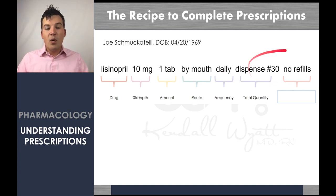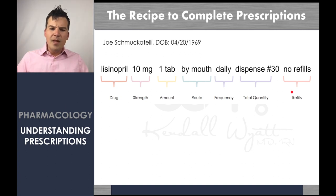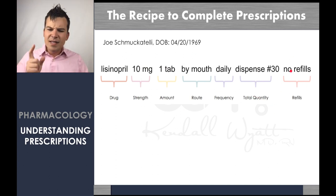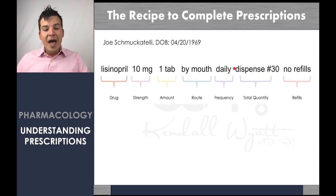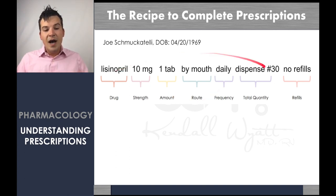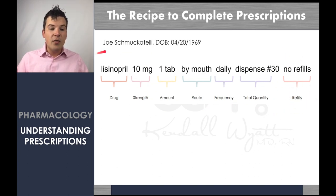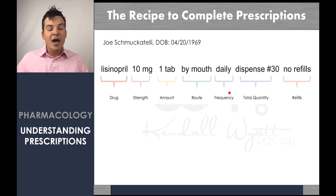When writing a prescription, you need to know how many refills are supposed to be given. This prescription by itself is one 30-day amount. Refills are how many additional 30-day amounts need to be given — this is something that gets confused when people are first writing prescriptions. If I gave Joe lisinopril for 30 days but want him to have a three-month supply, how many more refills does he need? Two. The maximum refills in most cases are a total of six months, and we would want two additional refills to give Joe his lisinopril for three months.